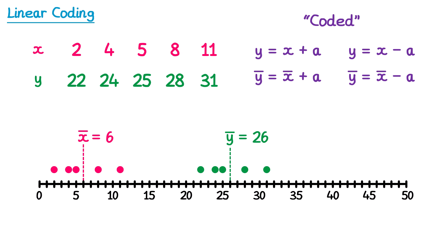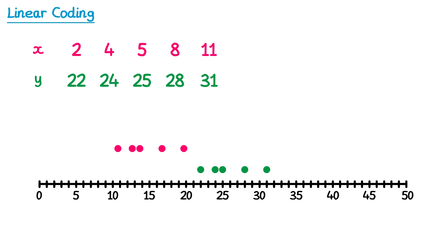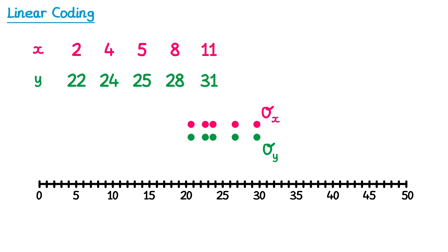So we've seen what happens to the mean if we code data like this, but what happens to the standard deviation? Well let's take the two sets of data and line them up. We have the x values in red and the y values in green. You can see that the two sets of data are equally spread out, in which case the standard deviation of the red values, sigma x, will be the same as the standard deviation of the green values, sigma y. So when we code data by adding or subtracting a value, whilst this does affect the mean, it doesn't affect the standard deviation.